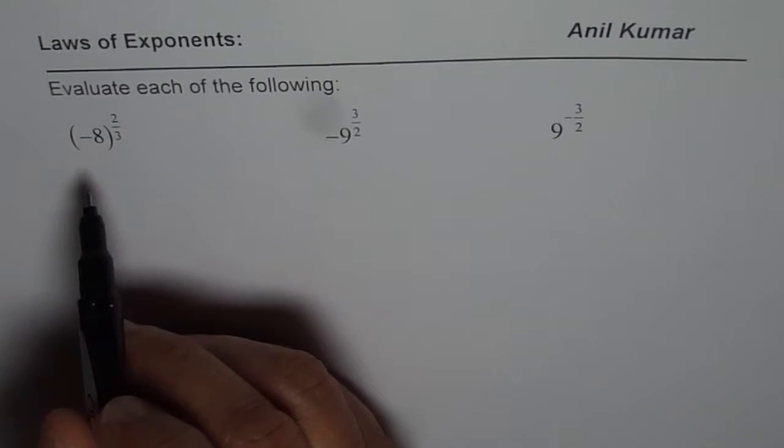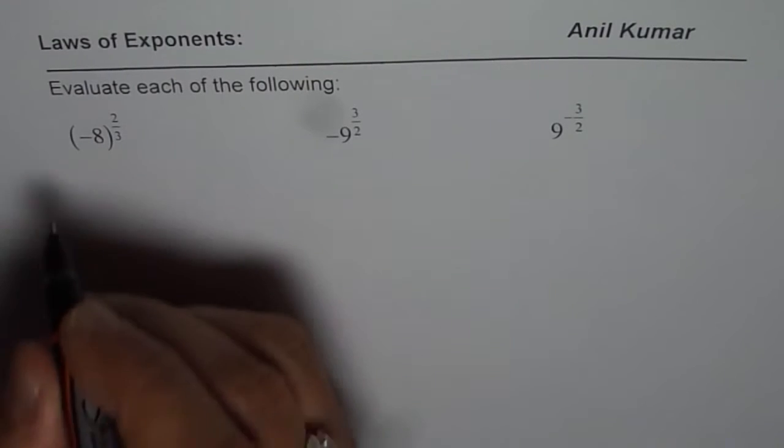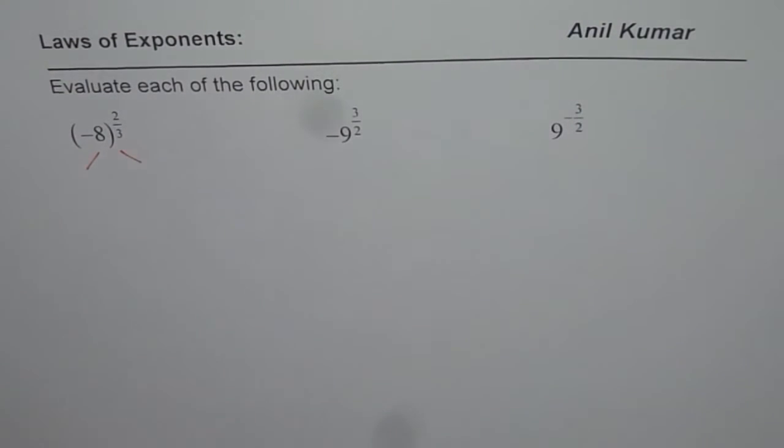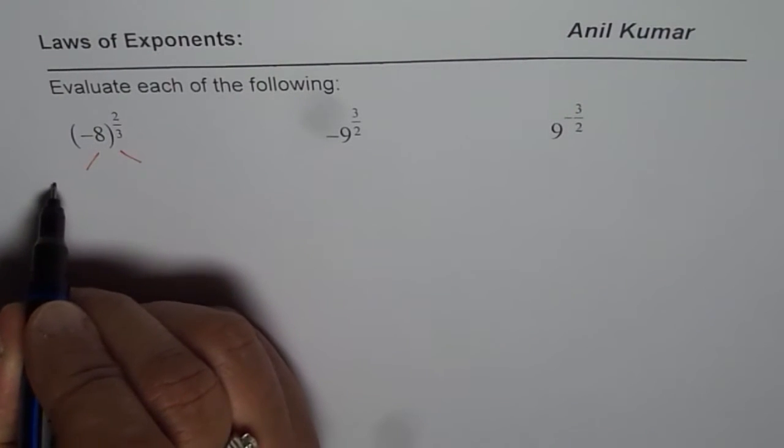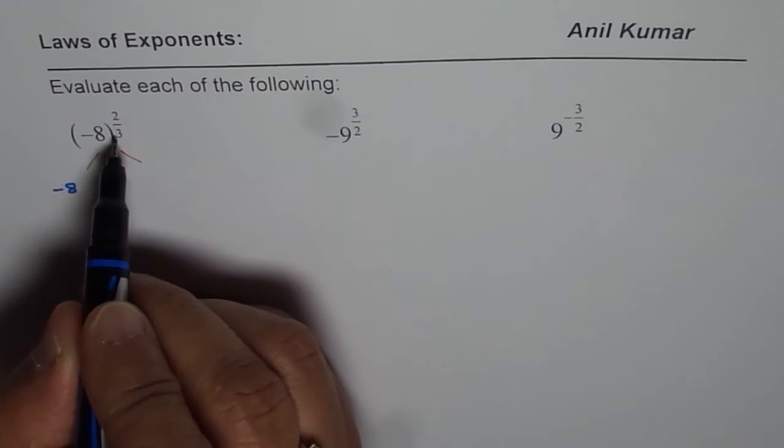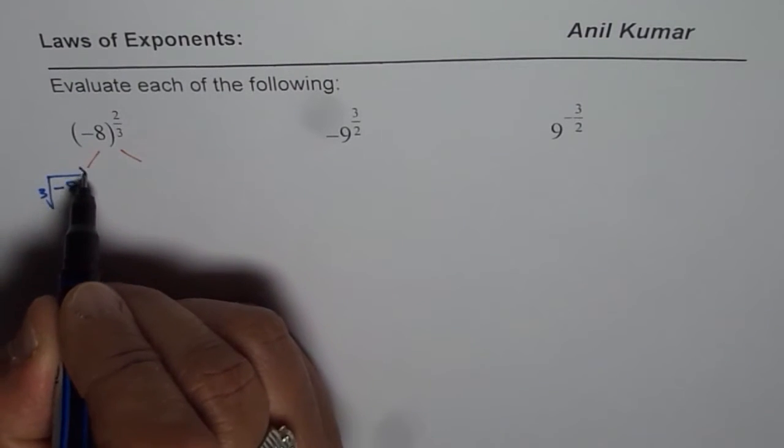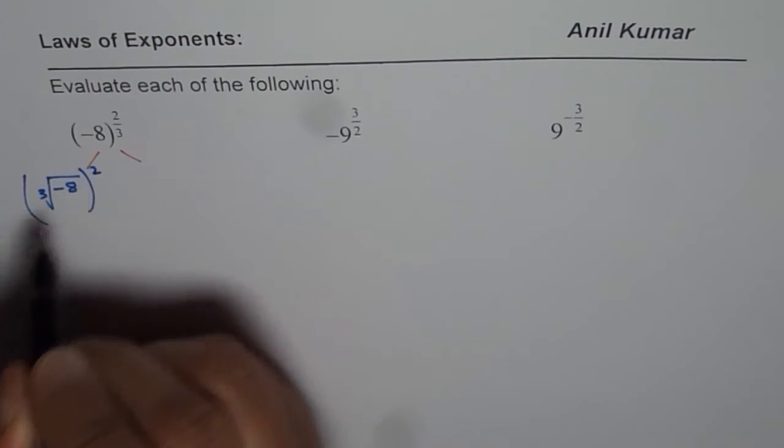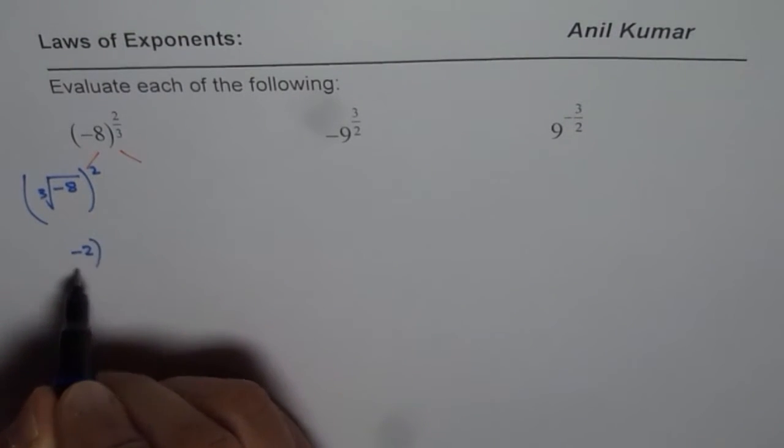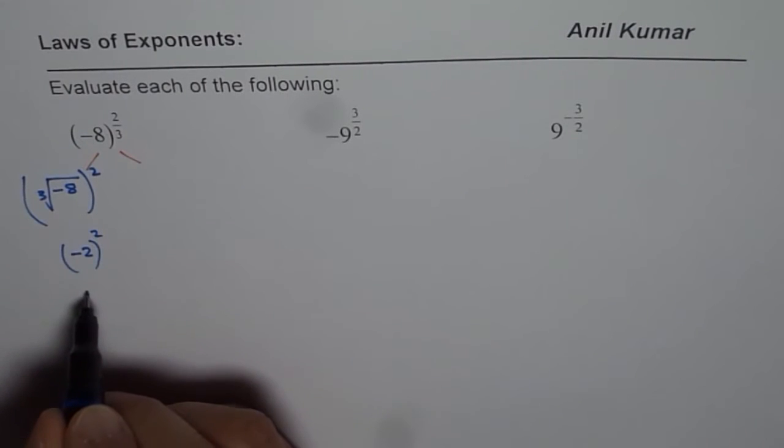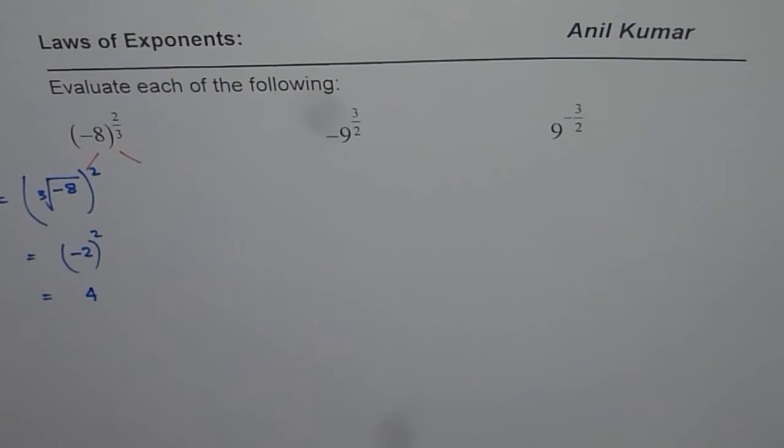The very first one is minus 8 to the power of 2 over 3. We could actually do it in a couple of ways, and here I'll show you two different ways. So the first one, we will say let it be minus 8. You could find the cube root first and then square it. So we could have cube root of minus 8, that is 1 over 3, and then we will square. Cube root of minus 8 is minus 2. So we have minus 2 square, and that equals 4. So we get 4 as our answer.